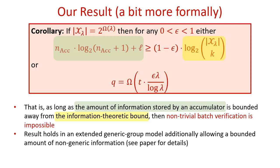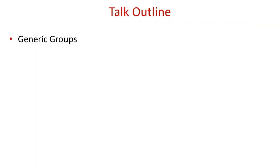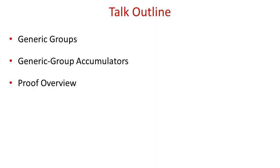Finally, our result extends somewhat beyond the generic group model. Specifically, it holds in an augmented model that enables capturing a bounded amount of non-generic information — please see our paper for more details. The rest of this talk will follow this outline: we will start by defining the generic group model, then define accumulators within this model, present a simplified version of our proof, and conclude with some closing remarks and open problems.